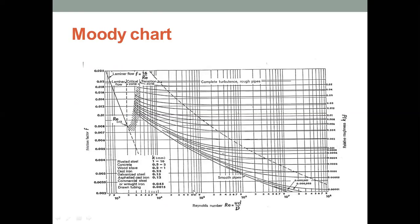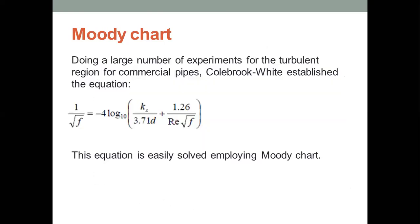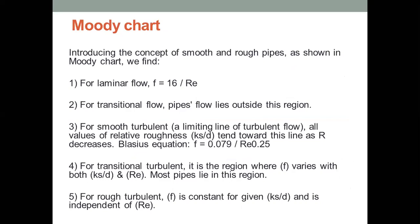Actually, this is a Moody chart. This is a graph where the Reynolds number represents the x-axis and along the y-axis is the friction factor and the z-axis is the roughness of different parts. We can calculate the friction factor for different types of flow, for laminar flow, transitional flow, or smooth turbulent flow.